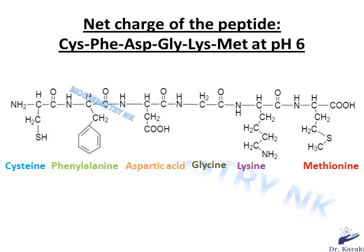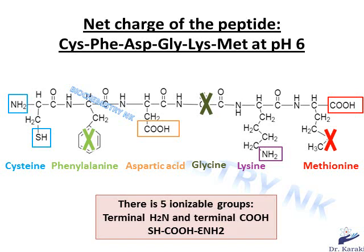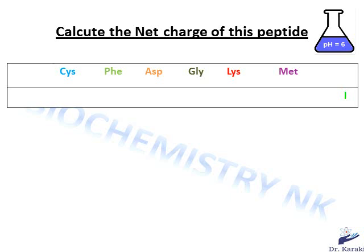We have the terminal carboxyl on the right side and the terminal amino group on the left side. Cysteine has a thiol (sulfhydryl) group that can lose a proton. Phenylalanine doesn't have an ionizable group. Aspartic acid has a carboxyl group that can lose a proton. Glycine doesn't have an ionizable group. Lysine has an epsilon NH2 that can gain a proton. Methionine doesn't have an ionizable group. So in total in this peptide chain we have five ionizable groups: the terminal NH2, the terminal COOH, the sulfhydryl, the side-chain COOH, and the epsilon NH2.